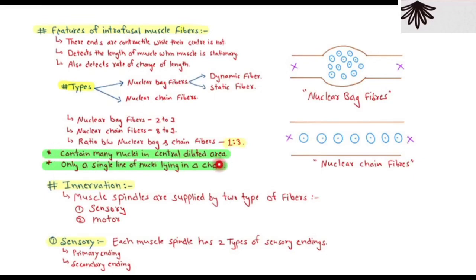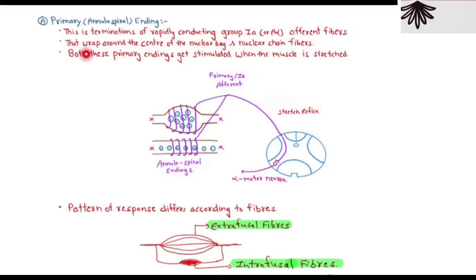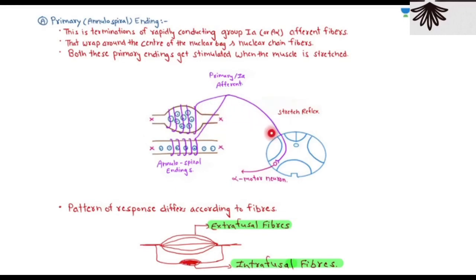Now we discuss innervation. Two types of fibers innervate the muscle spindle: sensory and motor. For sensory innervation, the muscle spindle receives two types of sensory endings — primary and secondary. The primary or annulospiral endings are terminations of rapidly conducting Group 1a / Aα fibers. These primary 1a afferent fibers synapse on alpha motor neurons, which in turn innervate extrafusal fibers.